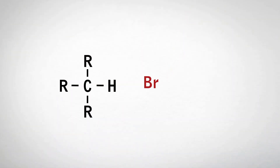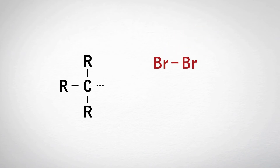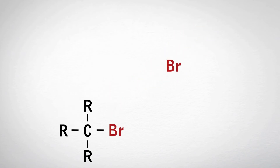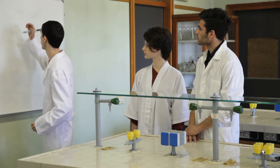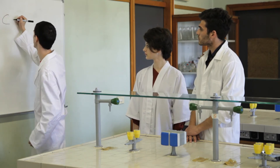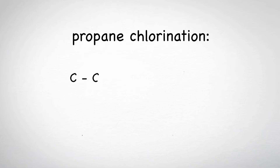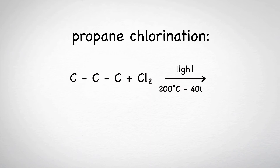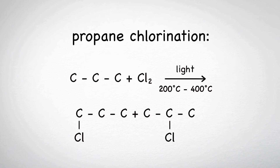Do not forget that alkanes also undergo substitution reactions, such as halogenation. For example, the chlorination of propane requires either light or high temperature, and produces a mixture of two isomers: 1-chloropropane and 2-chloropropane.